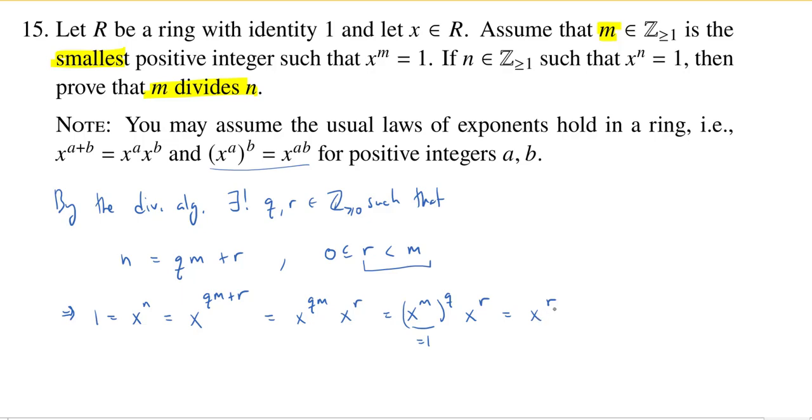Because we just showed that x to the r is equal to 1, r is less than m, and m is the smallest positive integer that when you raise x to it, you get 1. So the only way out of this is if r is equal to 0.